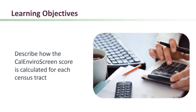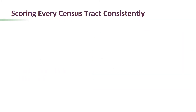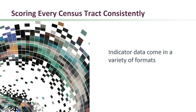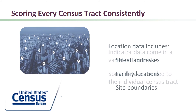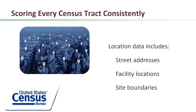Now we'll describe how the CalEnviroScreen score is calculated for each census tract. The available data for each of the indicators come in a number of different formats. Some data sets are already available at the census tract scale, such as data from the Census Bureau. Other data sources don't provide census tract information, so the location-related information needs to be established with respect to the census tract.